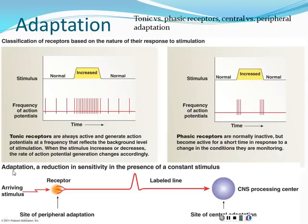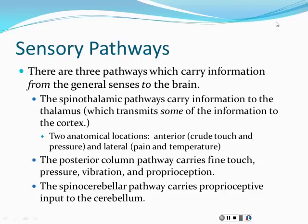Adaptation is a reduction in sensitivity when a stimulus is constant. Peripheral adaptation occurs at the receptor itself — it stops sending signals. Central adaptation occurs when the brain (notably the thalamus) ignores unchanging stimuli, blocking conscious sensation about things that are unimportant. Both mechanisms work together so the brain focuses on what's new or different.